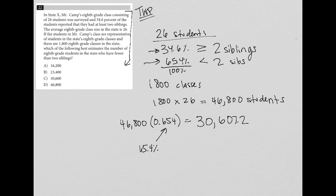What I get is that we expect there to be 30,607.2 students that have fewer than two siblings. The question does say which of the following best estimates, which means we're not looking for an exact answer, which means that our answer here must be choice C because 30,600 is the closest to 30,607.2.